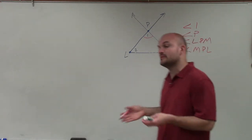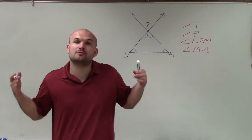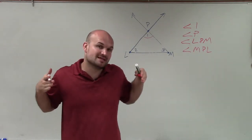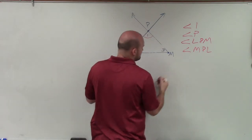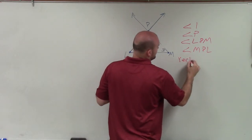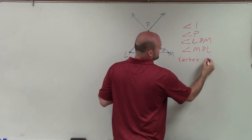Now to identify the vertex, remember the vertex is going to be the common endpoint where the two rays or two line segments are going to come together. So you can see we have our two lines come together at point P. So our vertex is going to be point P.